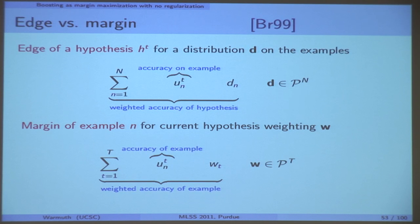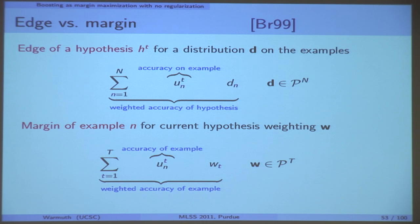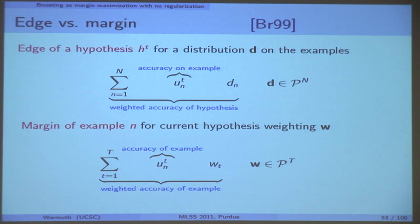This is going to be our fundamental notion. Unfortunately there are two sets of weights: weights on the examples, and weights on the hypotheses. That's why this thing is a little bit complicated. Support vector machines also have two sets of weights — the weights on the features and the weights on the examples — but in SVM everything is simpler because it's quadratic regularization. Here it's not.